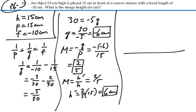We have a convex mirror with a focal length of minus 10, and our object is at 15 centimeters, and it's 15 centimeters high.